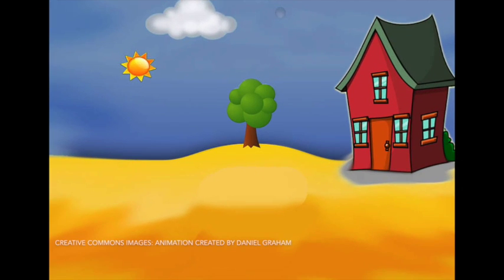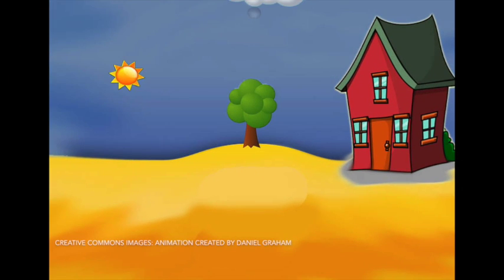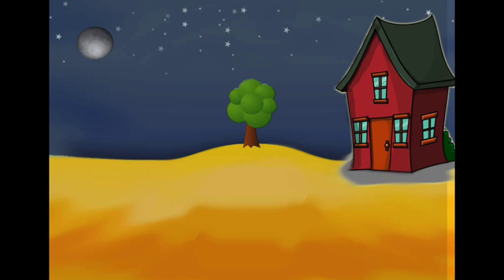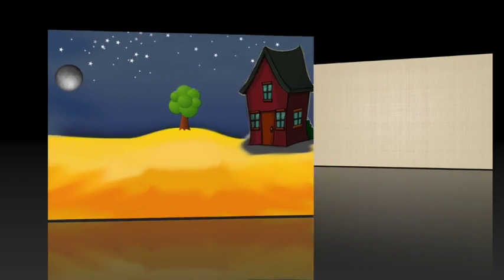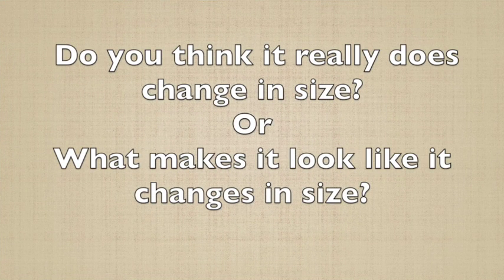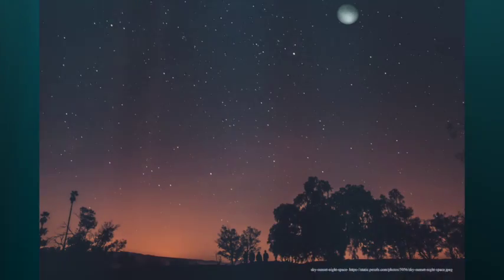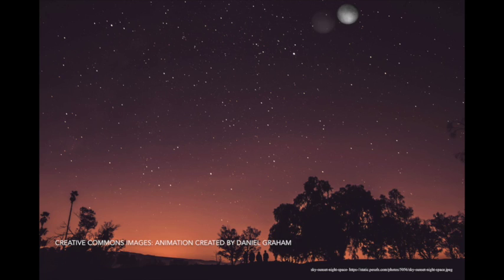Here is our second question. The moon, as it moves through the sky from the time it rises to the time it sets, appears to change in size. Do you think it really changes in size, or what makes it look like it changes in size? Well, the answer is the moon doesn't change in size — it's just an optical illusion.